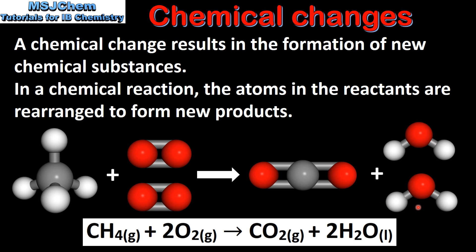So from this example we can see that in a chemical change the atoms in the reactants are rearranged to form new chemical substances.